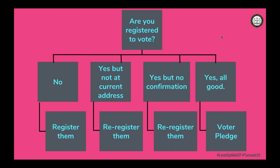When crafting your script, the first question is: are you ready to vote? If they say no, register them. If they say yes but they're not registered at their current address, re-register them. If they say yes but haven't received confirmation, re-register them. If they're confirmed registered and ready to vote, get them to pledge to vote, collect their information, and database them for voter contact. You might make the script more detailed for your campus, but this is the basic framework.